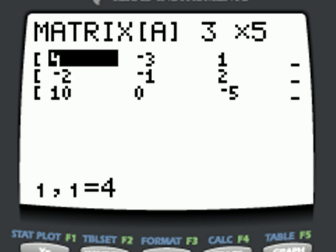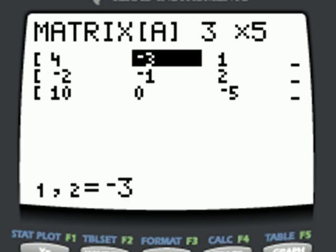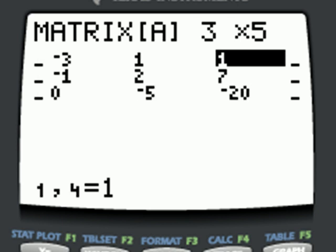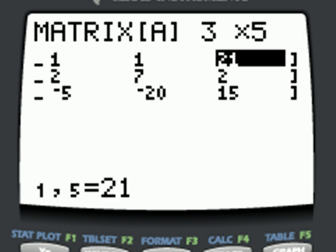I'm going to check it by going down the columns, comparing it to my original system. Four, negative two, ten. Negative three, negative one, zero. Notice the missing y term in the third equation. We would put a zero in its place. One, two, negative five. One, seven, negative twenty. Twenty one, two, and fifteen.